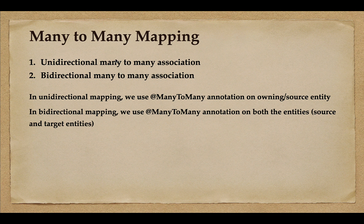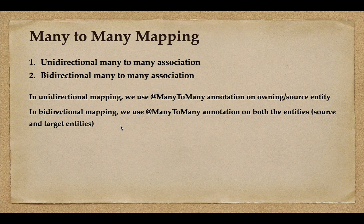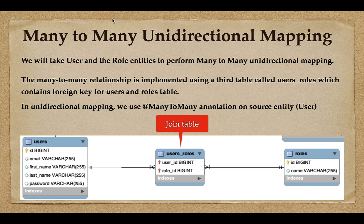Many-to-many mapping can be either unidirectional or bidirectional. In unidirectional mapping, we use the @ManyToMany annotation on the owning or source entity. In bidirectional mapping, we use the @ManyToMany annotation on both the source and target entities. In the next lecture, we'll start implementing many-to-many unidirectional mapping.